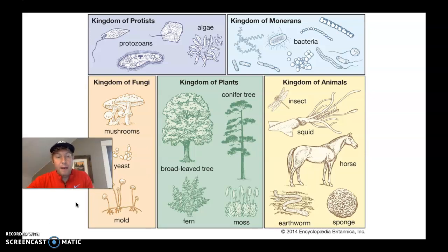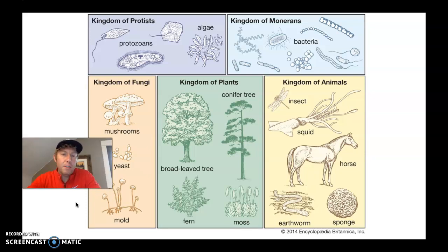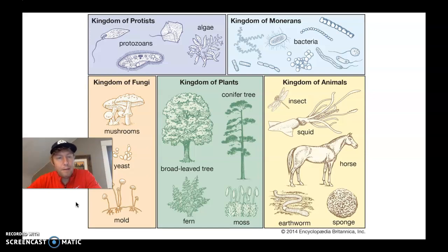We have the kingdom animalia, the kingdom of animals — that's like humans, earthworms, insects, squids. And two others that you probably don't know as much about are the Monera, which is the kingdom of bacteria, and the kingdom Protista — the protists, which are kind of plant-like and animal-like. They're interesting; algae in lakes will be partly that.